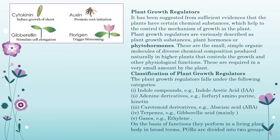Plant growth regulators — how are they helping? The way we have seen in case of human beings that there are chemical coordinations taking place, like there are different types of hormones which are responsible for the growth and development of the human body. Similarly in case of plants, there are plant growth regulators and these plant growth regulators help in the growth and development of the plant. The way hormones are required in very lesser quantities, similarly the plant growth regulators are also required in a very less quantity and they are produced in the plant in a different place from where they function. It has been suggested with sufficient evidence that plants have certain chemical substances which help to control the mechanism of growth.